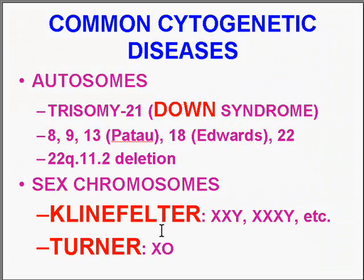We're going to talk about either extra or missing sex chromosomes. In males, we're going to talk about Klinefelter syndrome, in which there's at least one extra X chromosome — usually one, sometimes two or three. Or Turner syndrome, which is the absence of the second X chromosome.